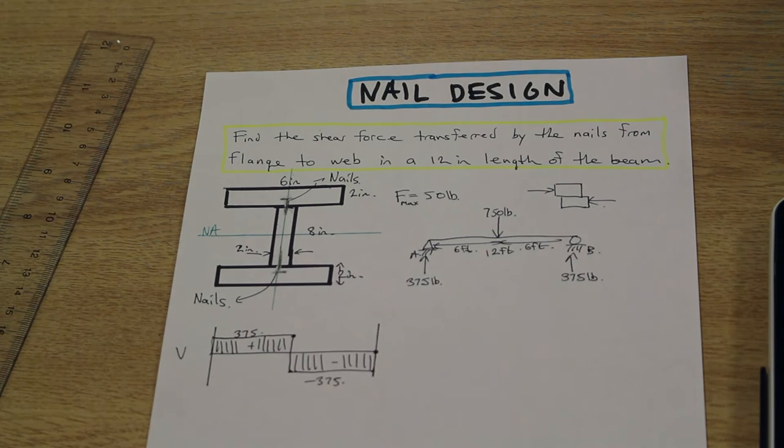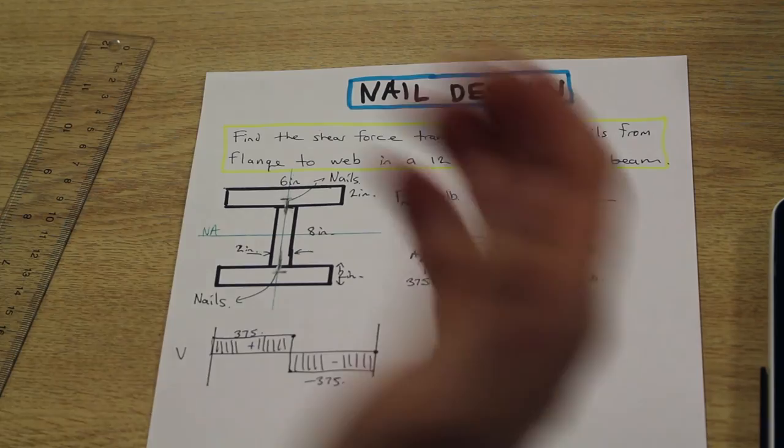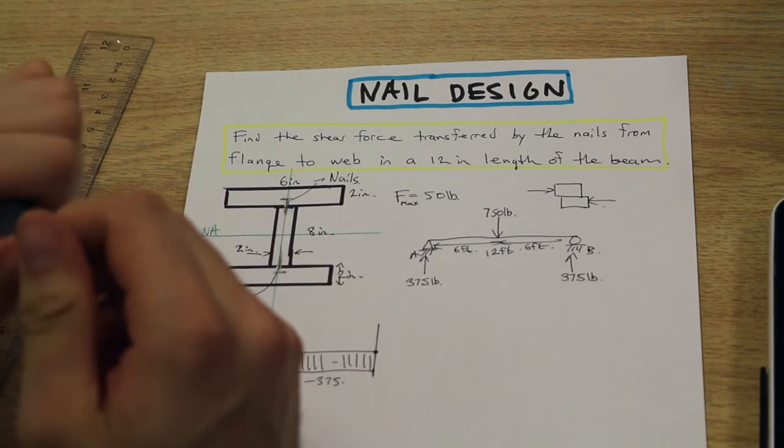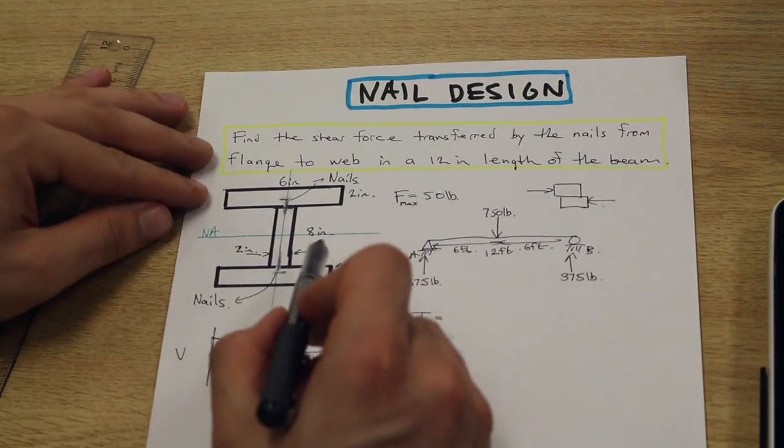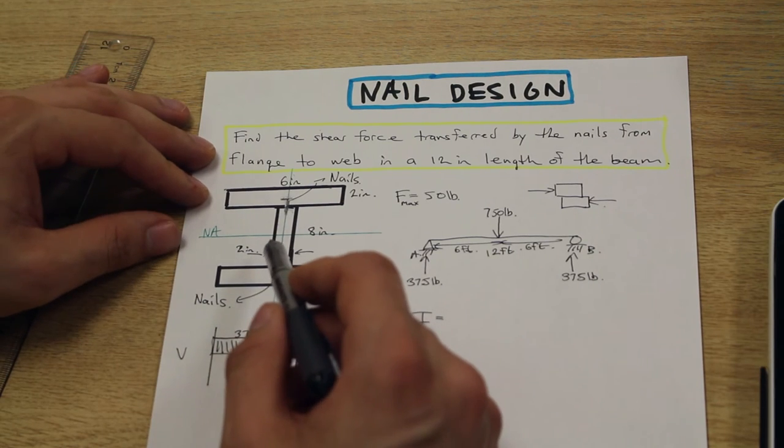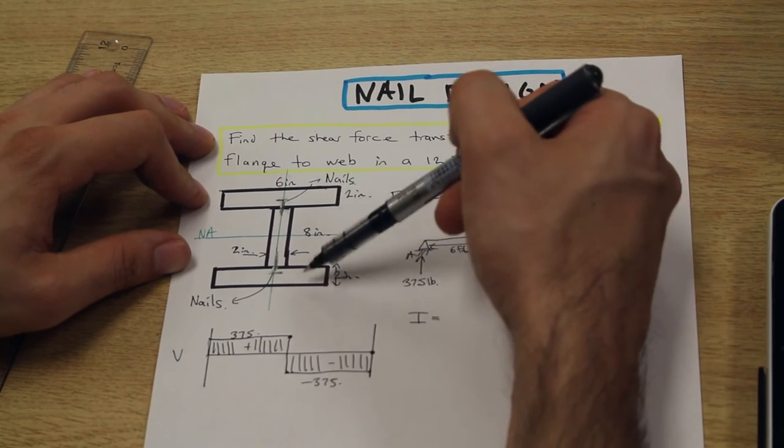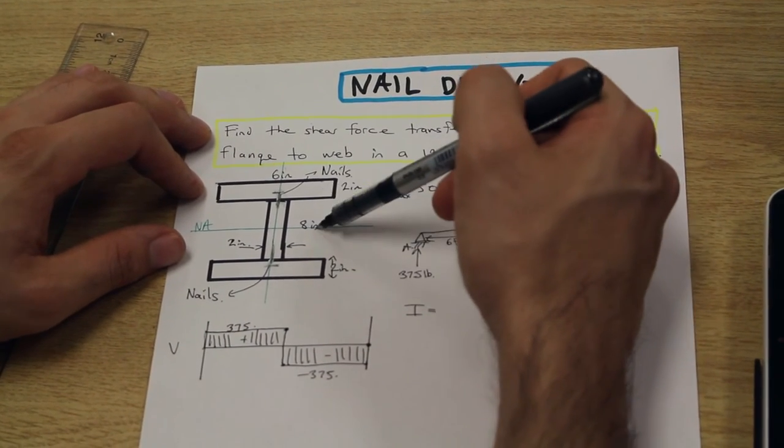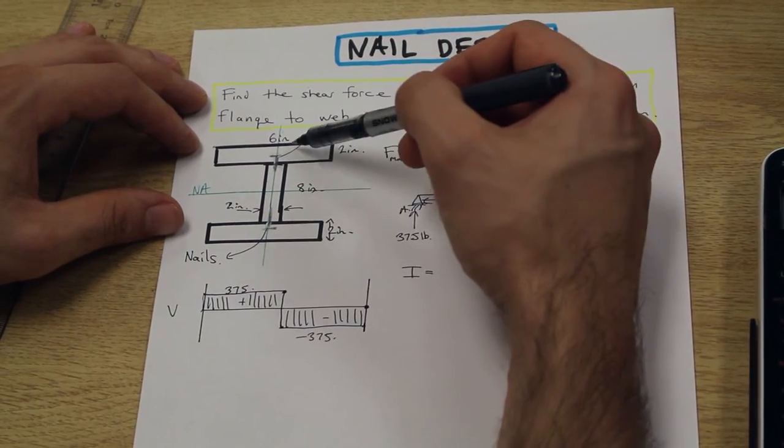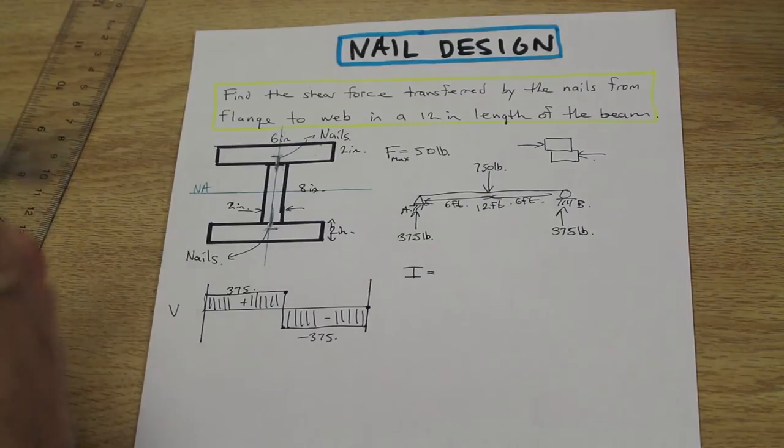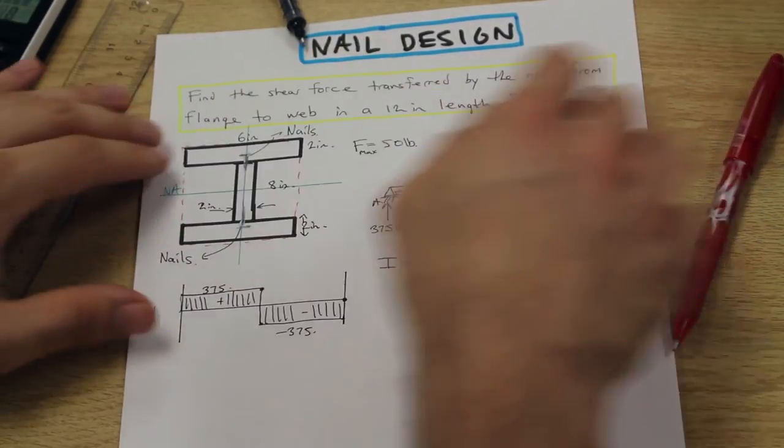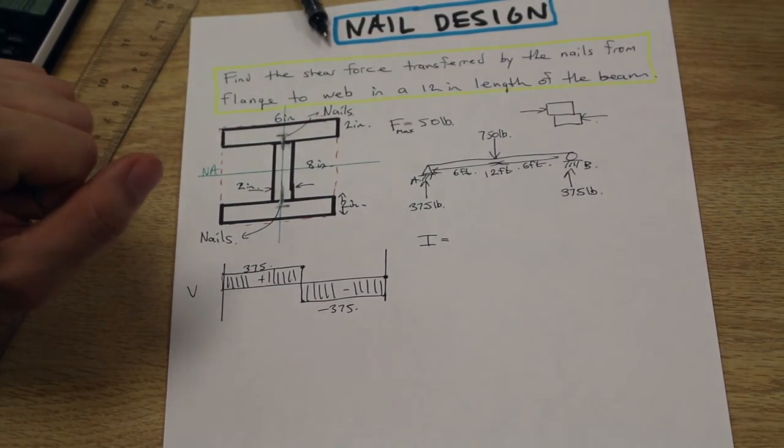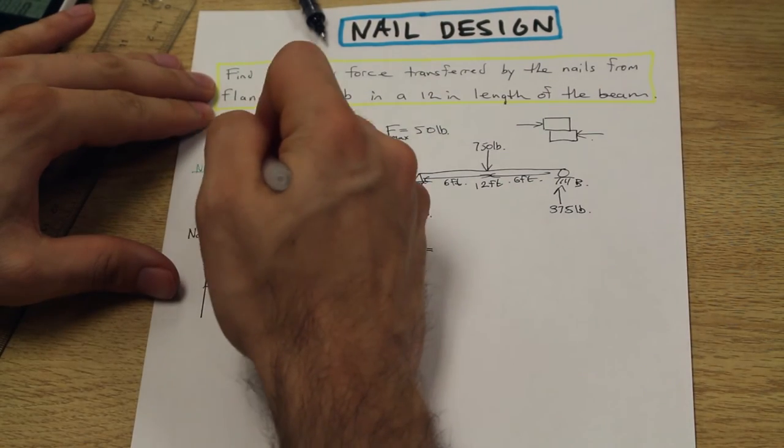Now that we have the shear force, or the maximum shear force acting on the beam, we can now move to solving our I, which is our second step. I'm going to show you a quick shortcut of how to calculate the moment of inertia of a perfectly symmetrical beam like this, instead of using the parallel axis theorem. Because it's equal in both the x and the y axis, we can take the moment of inertia of this entire square and subtract this empty area.